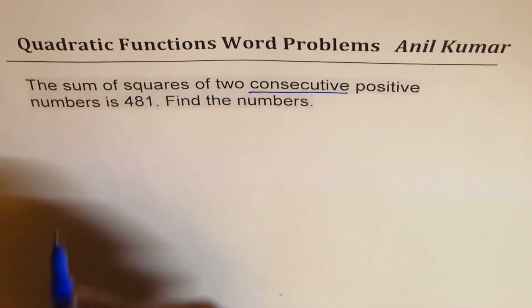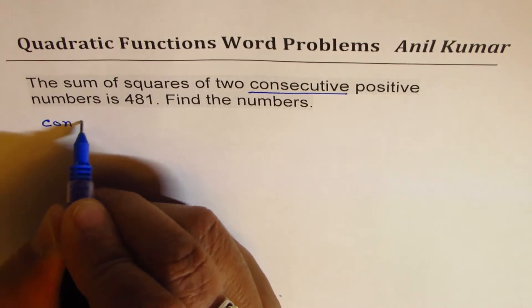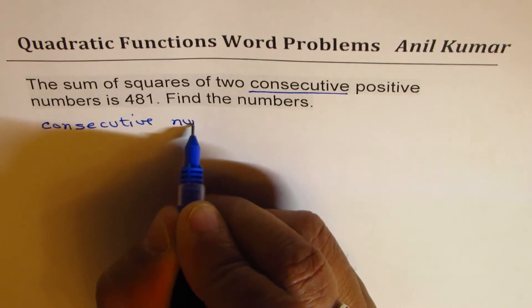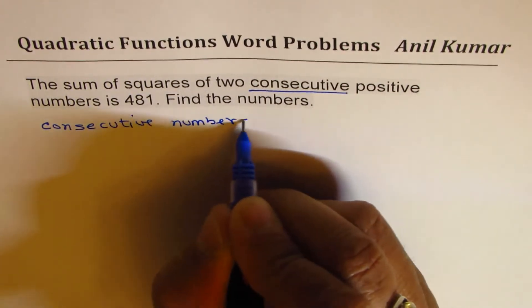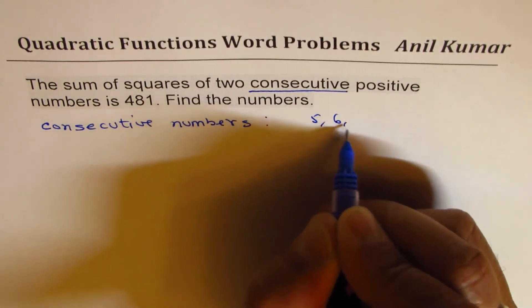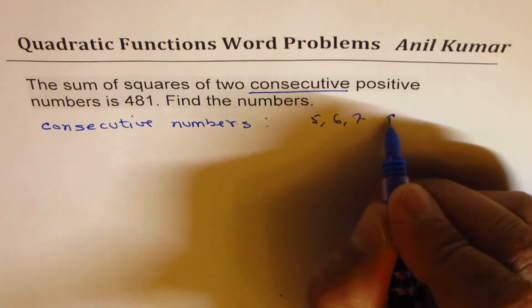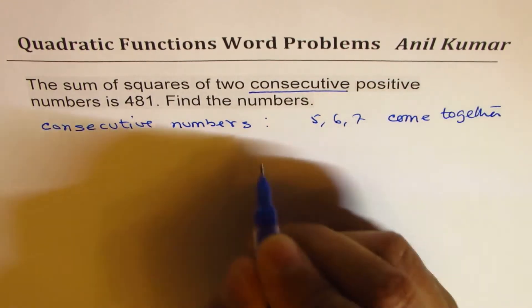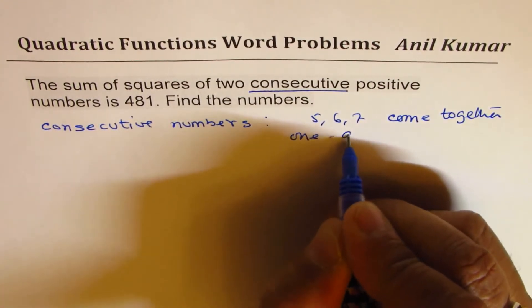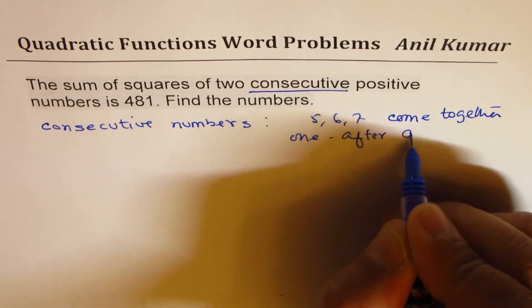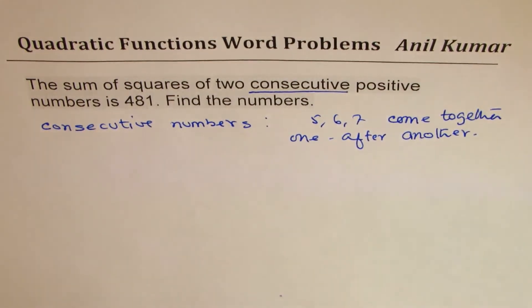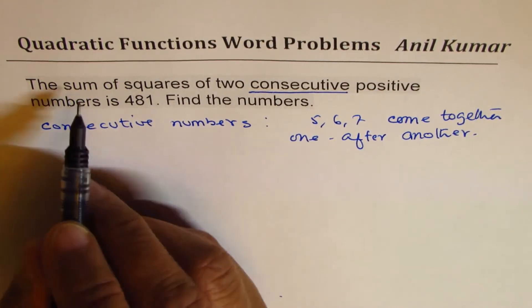The term which we want to understand is consecutive numbers. So what does that mean? Consecutive numbers means like numbers 5, 6, 7 - they come together, which come together one after another.